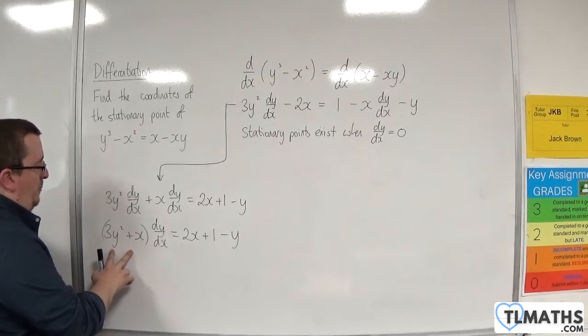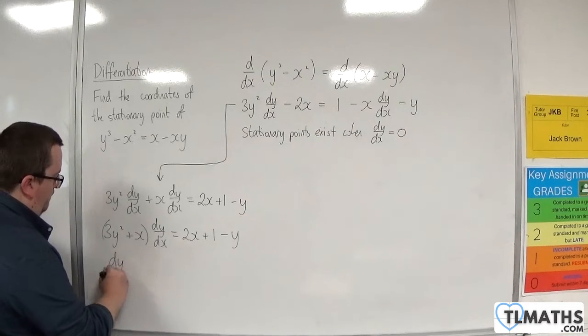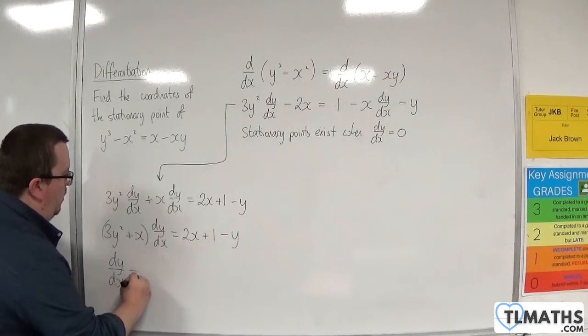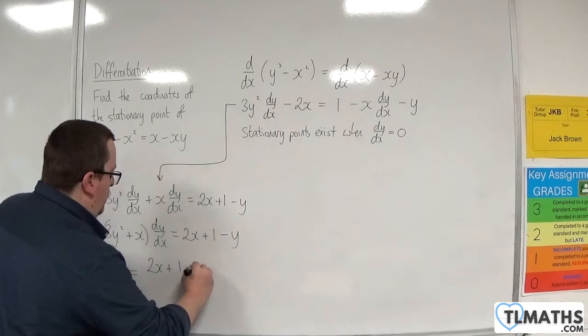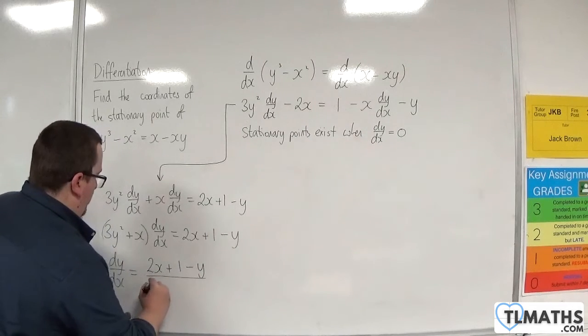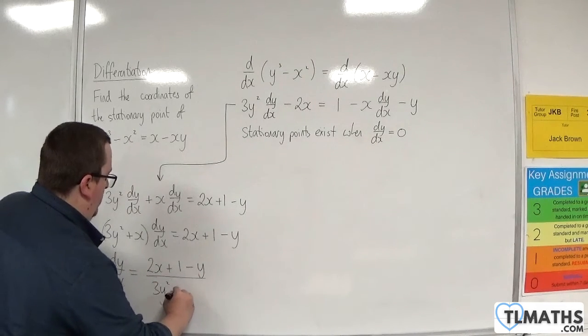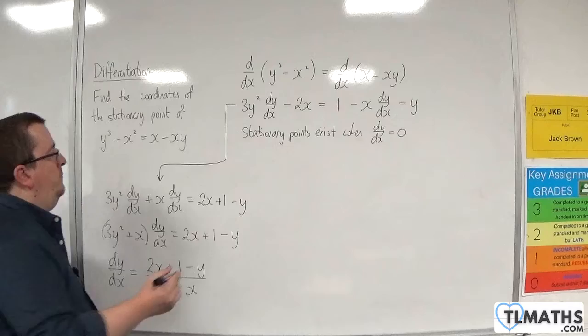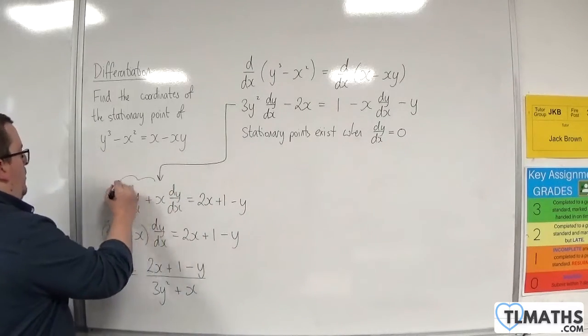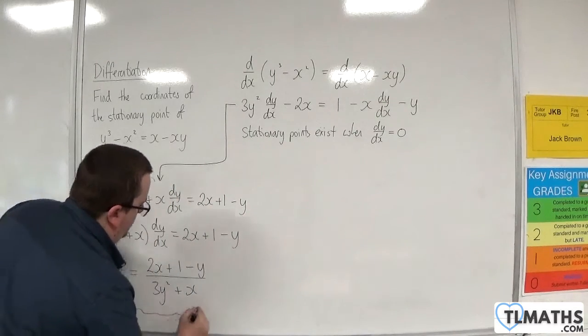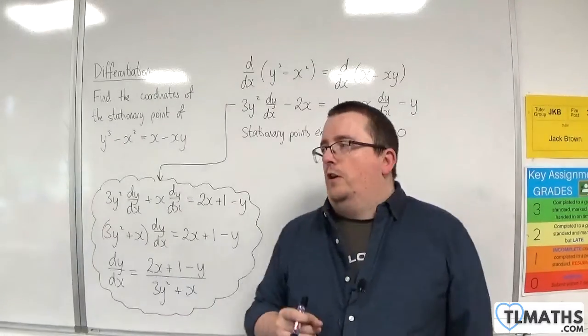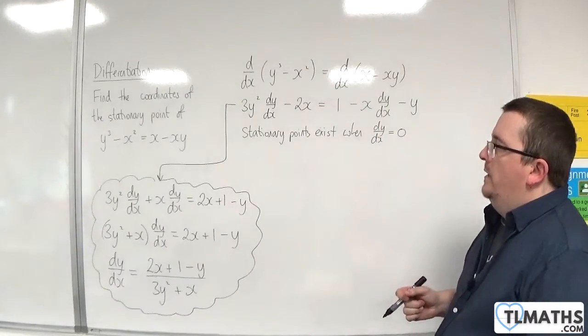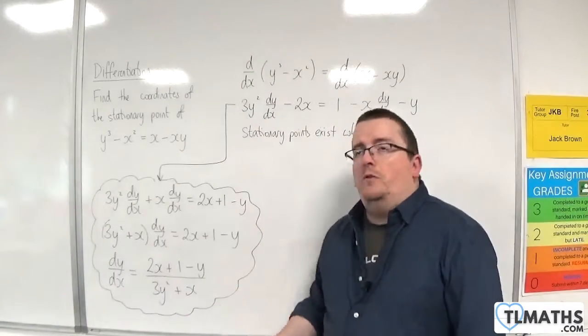And then divide both sides by this bracket. And we get our dy/dx = (2x + 1 - y)/(3y² + x). So that, to get your dy/dx, is one route that you can go down. And then you need to put this equal to 0 and solve.